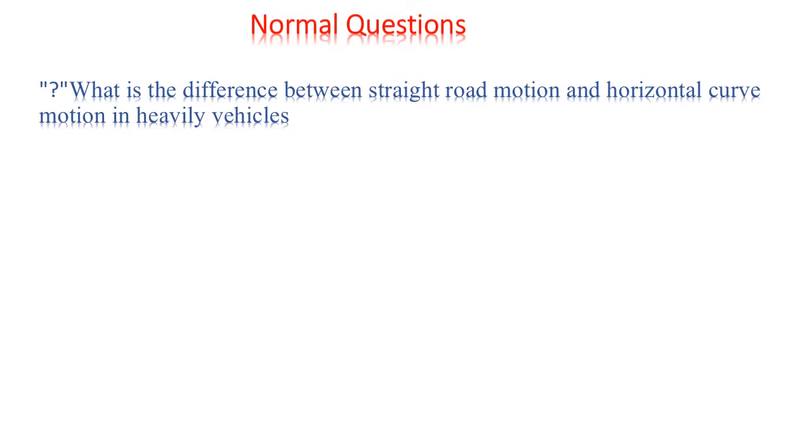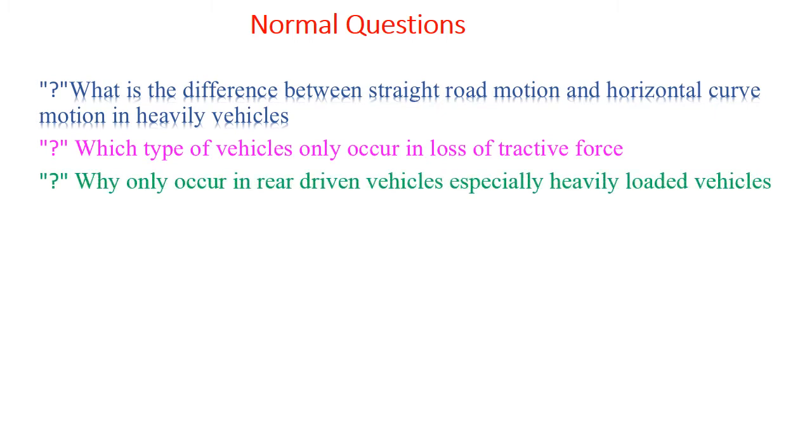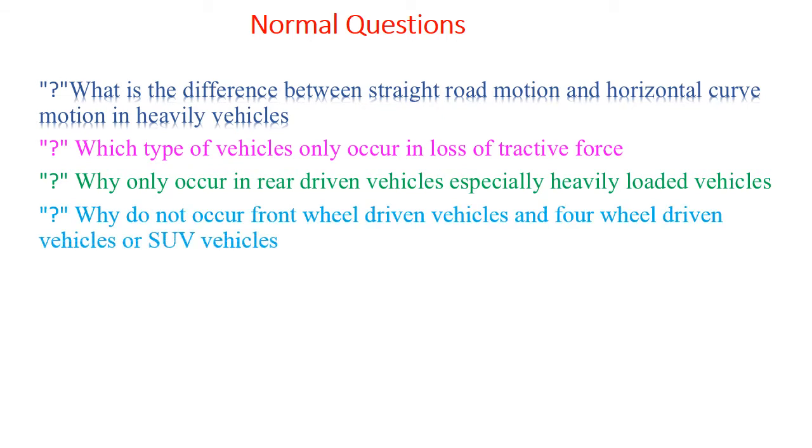What is the difference between straight road motion and horizontal curve motion in heavily vehicles? Which type of vehicles only occur in loss of tractive force? Which only occur in rear-driven vehicles, especially heavily loaded vehicles? Why do not occur in front-wheel-driven vehicles and four-wheel-driven vehicles or SUV vehicles?